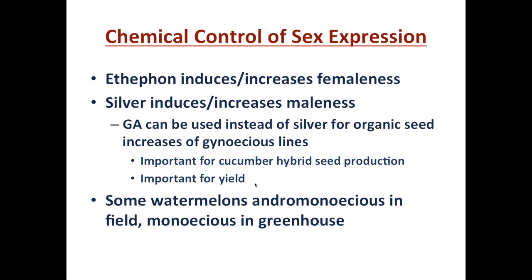There are also some convenient changes that occur during the season. Watermelons are especially difficult to pollinate in summer because the flower buds are hidden and hard to find the day before they open for pollination. As you move into the greenhouse, especially in winter, many andromonoecious flowers become monoecious, and that really expedites the process.